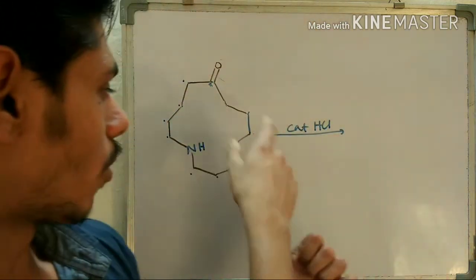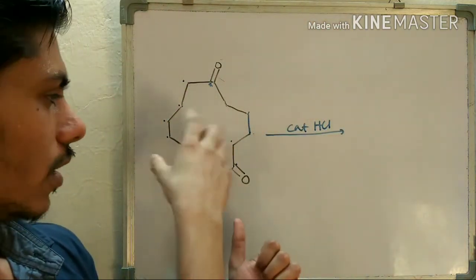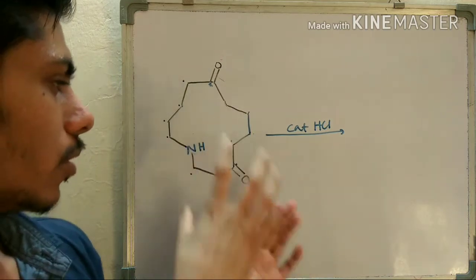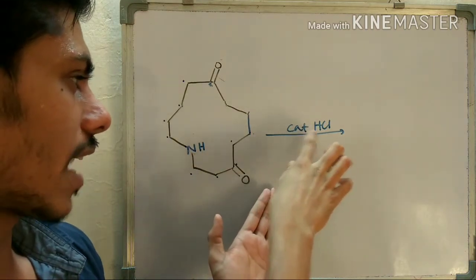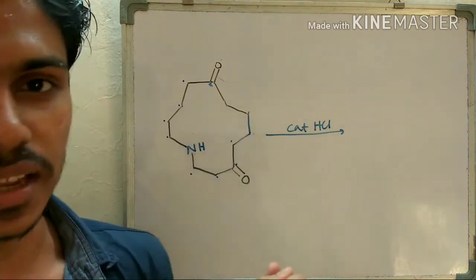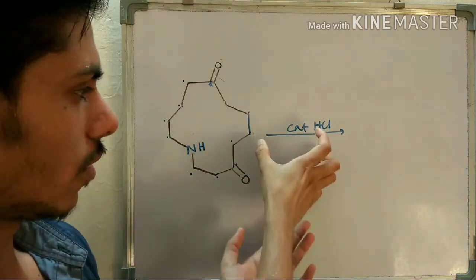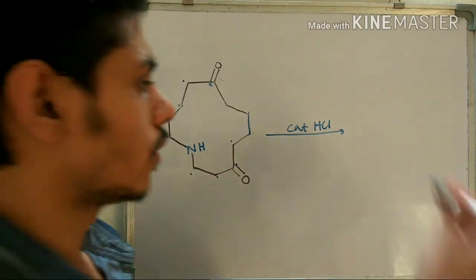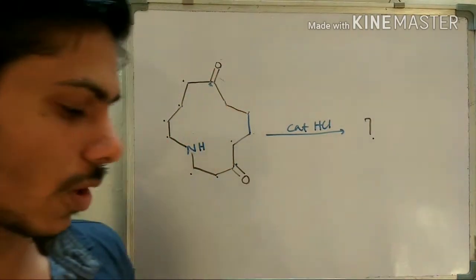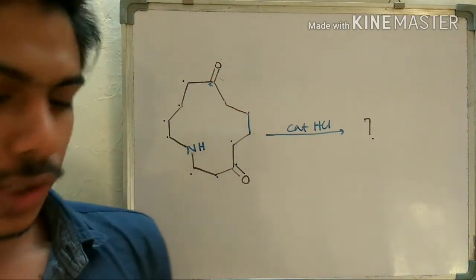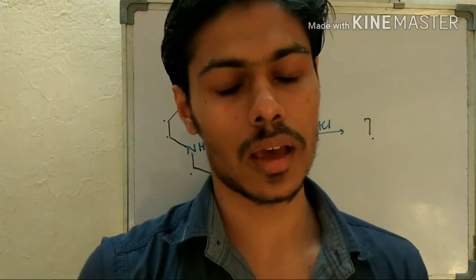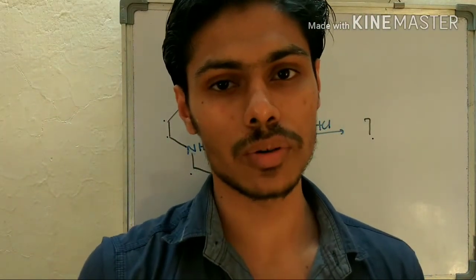So you can see this is the molecule — this is a macrocyclic type molecule where you have an amine group and two carbonate groups, and here you have catalytic HCl. So you are giving only catalytic HCl — what will be the product?